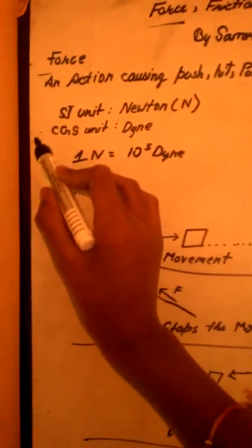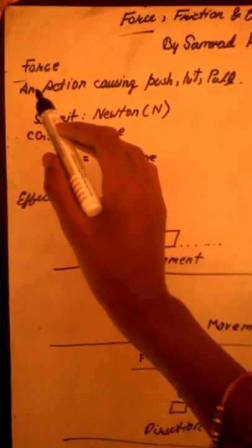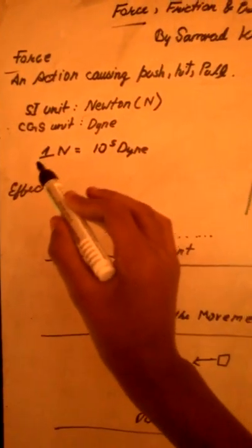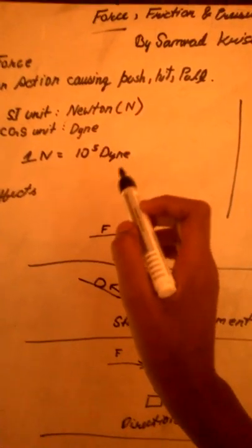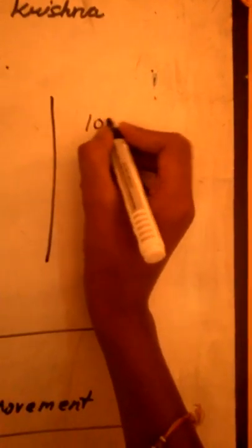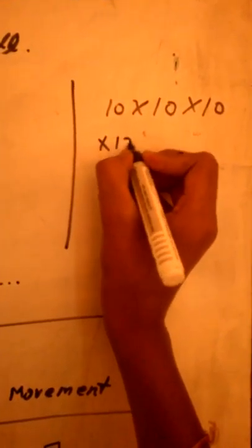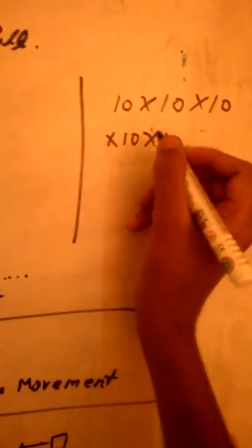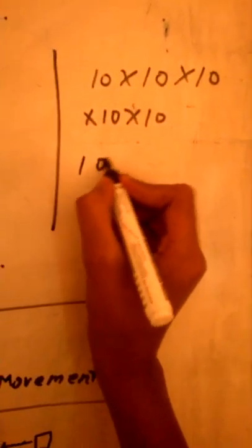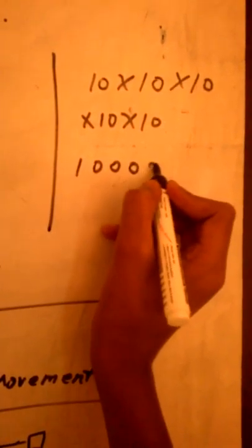Newton. And the CGS unit of force is dyne. Now, one Newton equals 10 to the power 5 dyne. So we can calculate: 10 into 10, 10 into 10, 10... so near about 100,000...